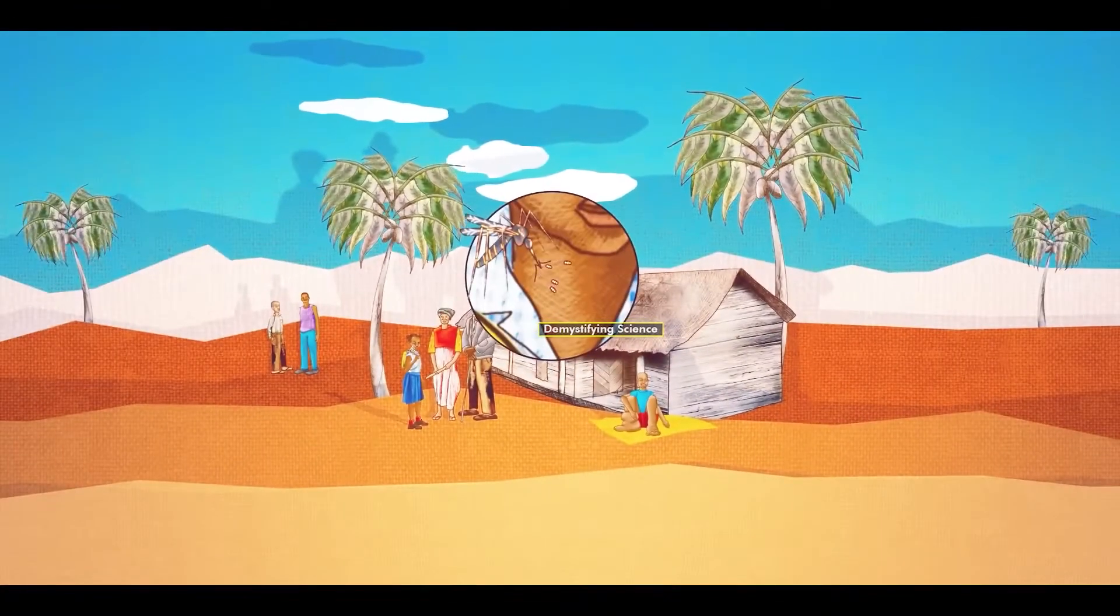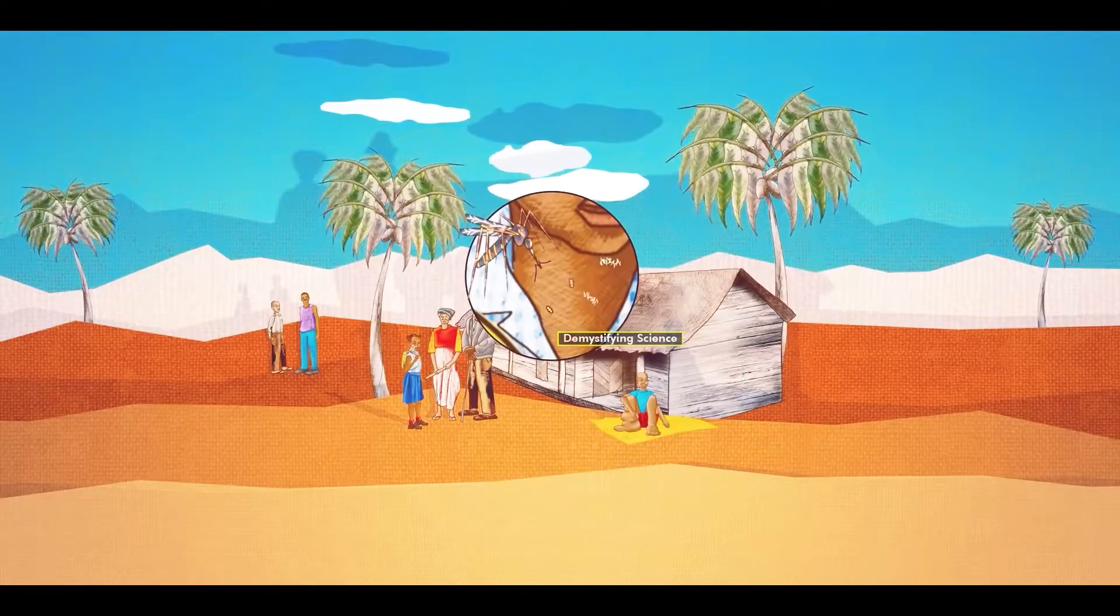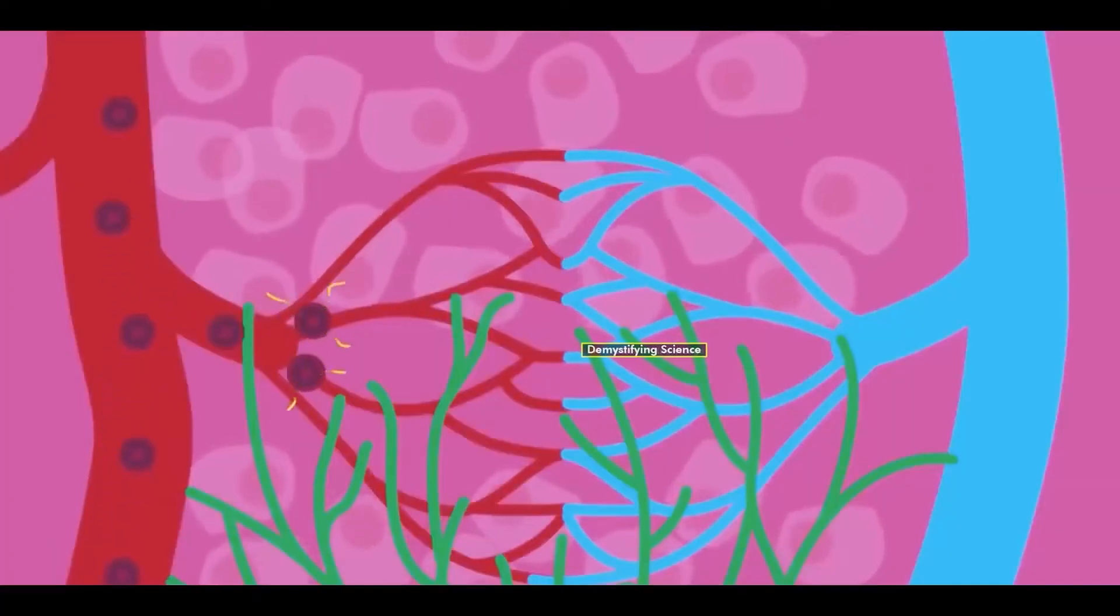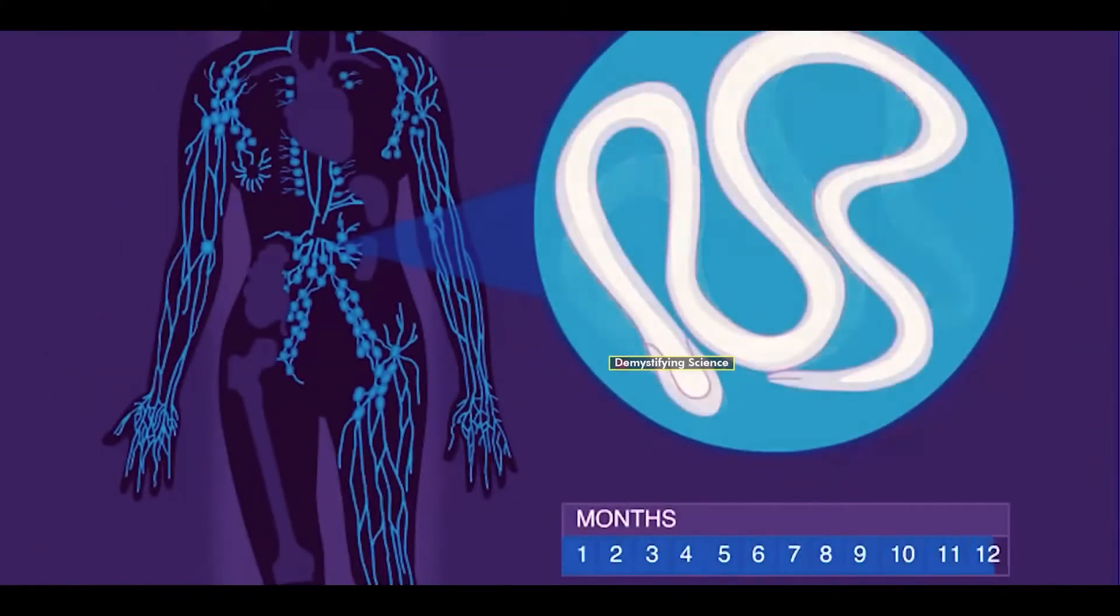When a mosquito carrying roundworms bites a human, these roundworms migrate from the bloodstream into the lymphatic system, where they grow and reach adulthood.